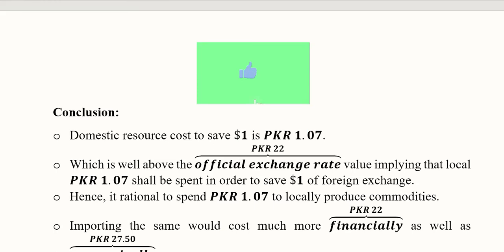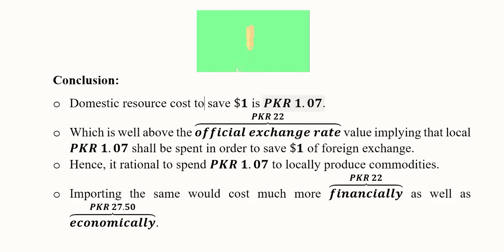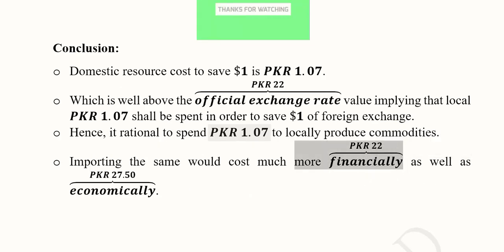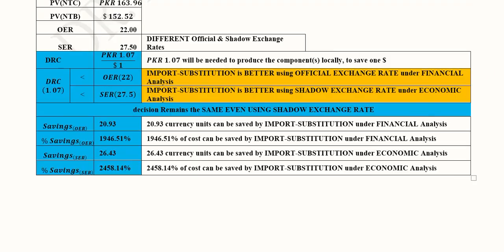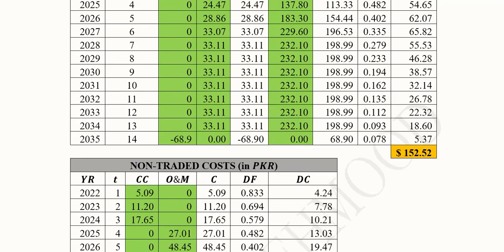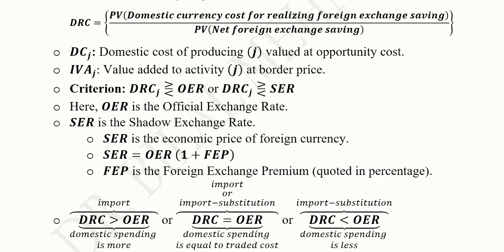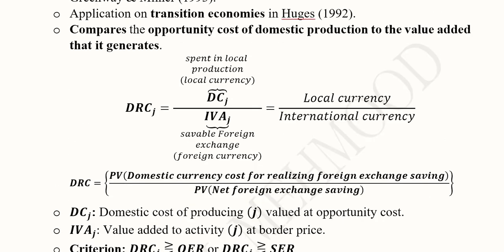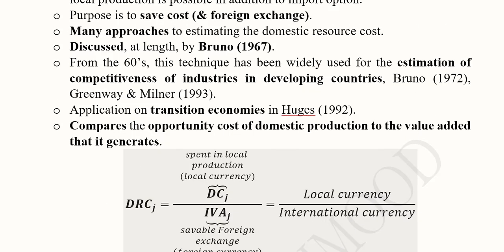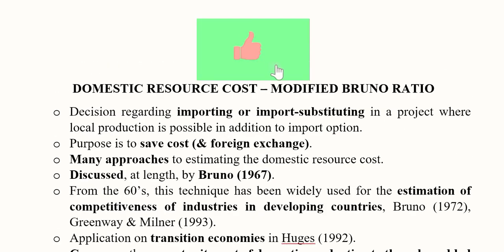It is possible to save quite a significant amount through import substitution. The final decision is that it is better to import substitute — both from the financial point of view using the official exchange rate and the economic point of view using the shadow exchange rate. This tool — the domestic resource cost or modified Bruno ratio — is used to decide whether to import or pursue local production as import substitution.